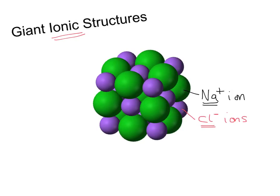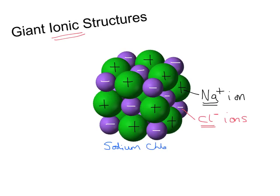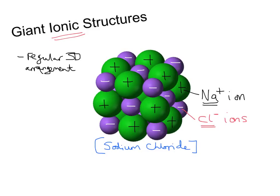Each one of these green circles has a positive charge associated with it, and each one of the purple dots, represented by a chloride ion, has a negative charge. This is representing sodium chloride, and it's the example we're going to use in this video. In ionic compounds, millions of ions are packed together in this regular 3D arrangement. It's known as an ionic lattice.